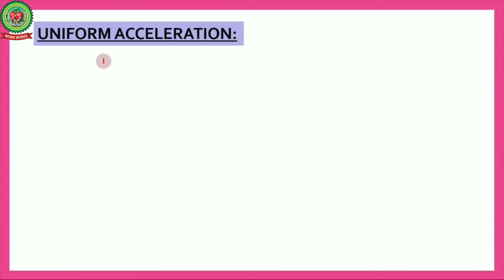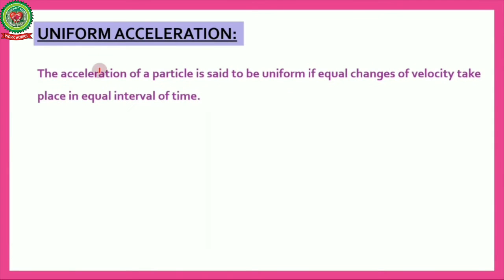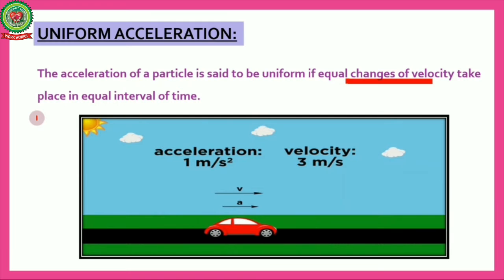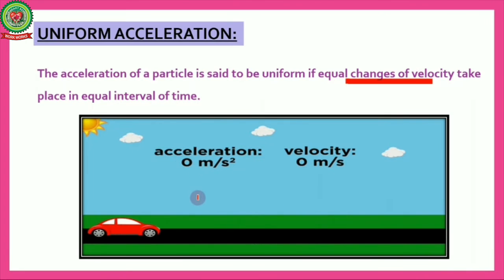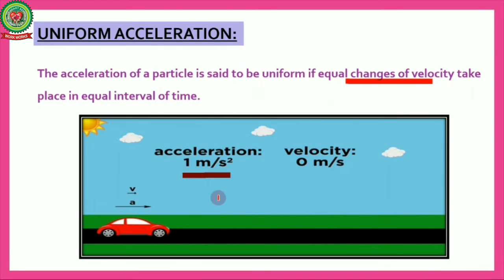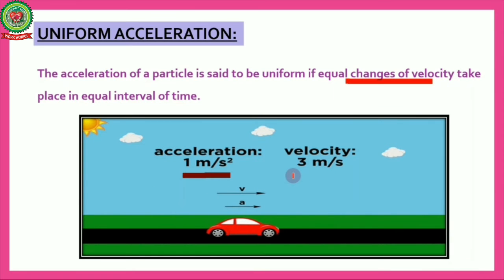Next is uniform acceleration. The acceleration of a particle is said to be uniform if equal changes of velocity take place in equal intervals of time. For example, if velocity changes by 1 m/s every second, then acceleration is 1 m/s². This is called uniform acceleration.